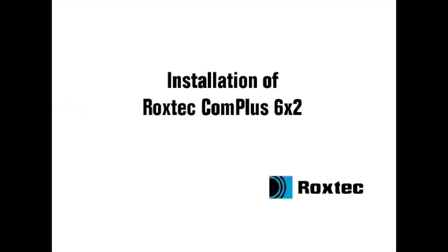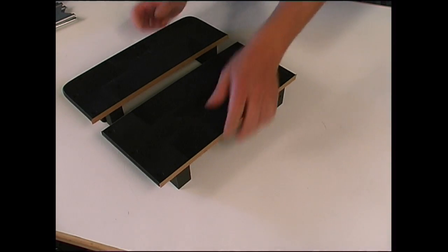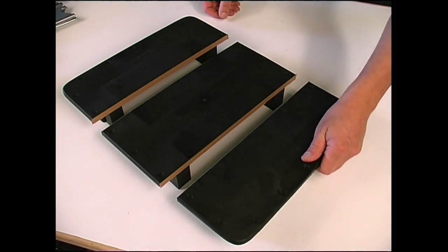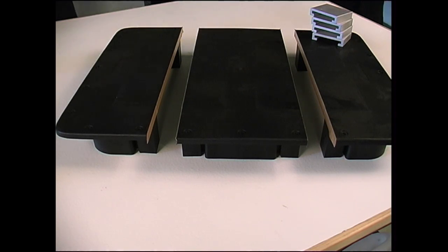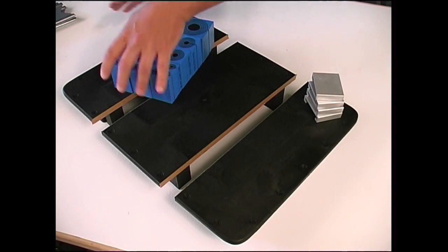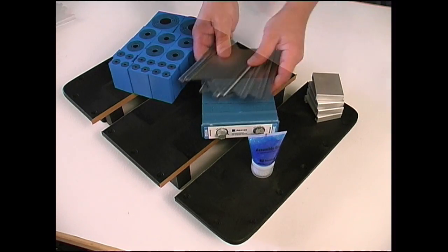Installation of Roxtec Complus 6x2. To install the Roxtec Complus 6x2, you need three frame parts with clips, sealing modules, the assembly gel, a compression unit, and the stay plates.